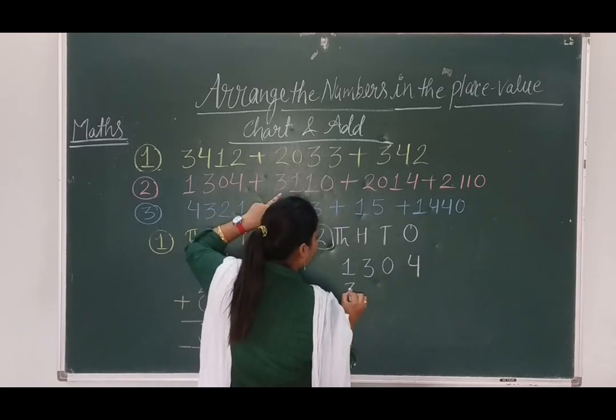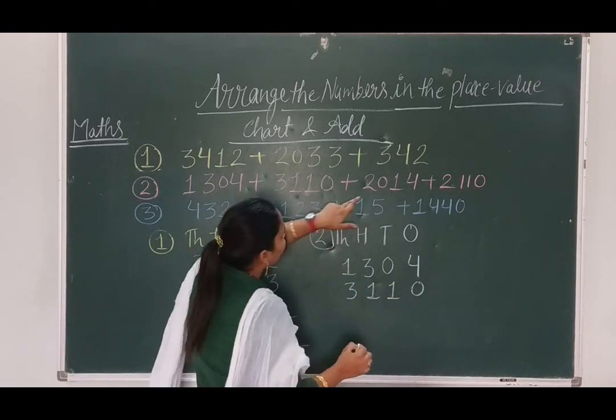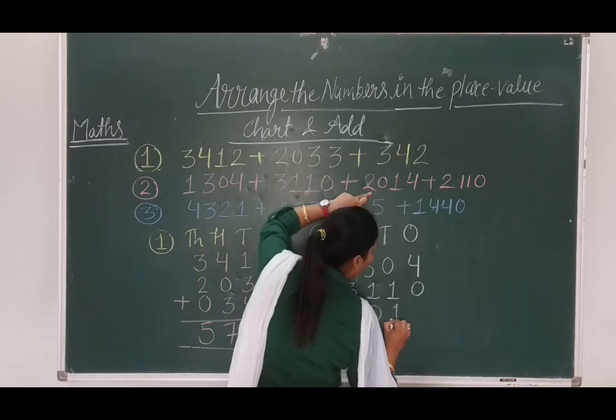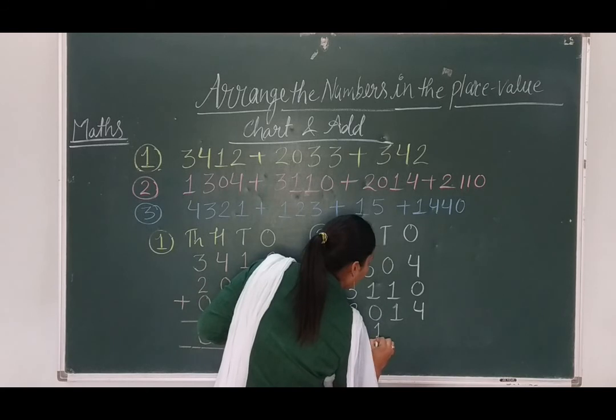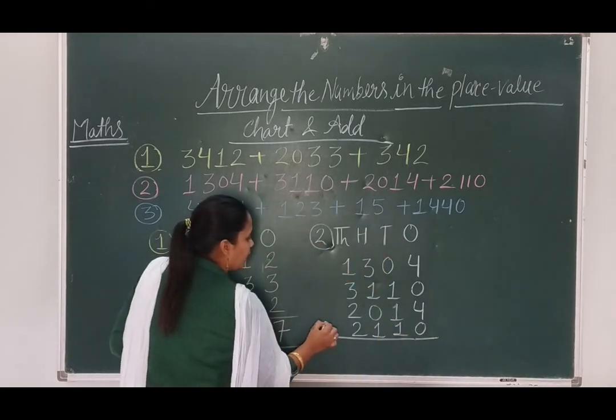Second one is 3110. Third one is 2040. And last one is 2110.